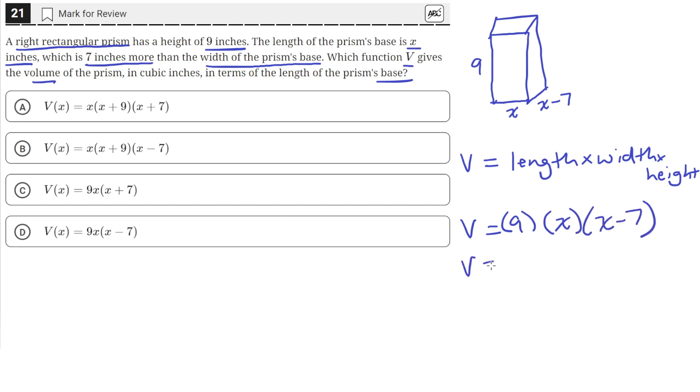Which is the same thing as saying 9x times the quantity (x minus 7). Which is answer choice D.